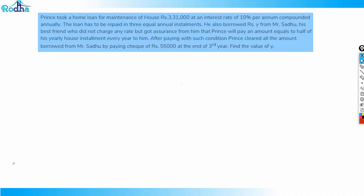Hi guys, let's look at this question. Prince took a home loan for maintenance of house amounting to rupees 3,31,000. It's a very good question on the concept of compound interest plus installments. He borrowed 3,31,000 at an interest rate of 10% per annum compounded annually, and the loan has to be repaid in 3 equal annual installments.